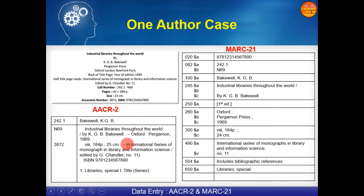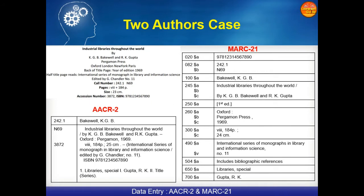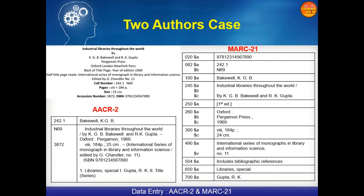Now let us see the case of two authors and how we can enter the detail. In the two-author case, everything will remain the same. In the statement of responsibility area, the second author name will be added — RK Gupta — and one added entry will be prepared under the name of the second author. In MARC format, here also everything will remain the same. Only the change will take place in the added entry. We have added the second author in 700 $A as an added entry and also in the statement of responsibility area: RK Gupta.